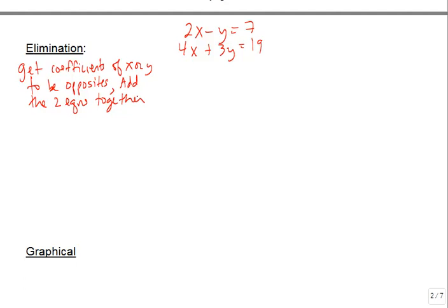When you decide which variable to make the coefficients opposites of, just use whatever looks easiest. You could multiply the entire top equation by negative 2 to make the 2x become negative 4x, matching the 4x in the bottom equation with opposite sign. You have to multiply the entire equation by negative 2; otherwise you're not keeping the equation balanced and you'll be changing your solution.